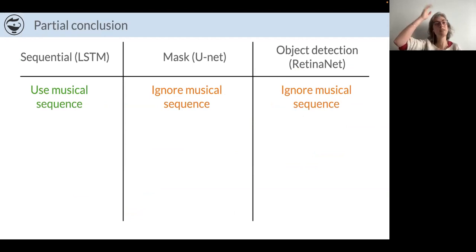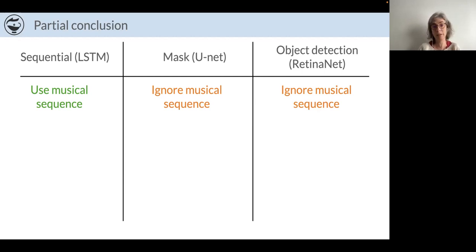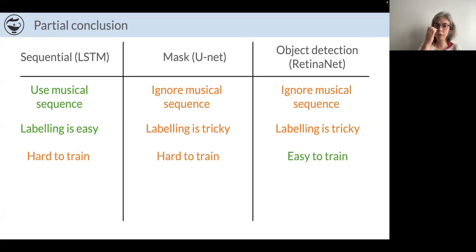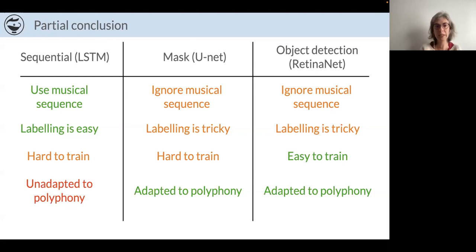To compare the three approaches: the sequential approach uses the musical sequence and directly predicts another form of sequence. Labeling is also easier with sequential approaches because you know what you put inside your music, whereas for spatial approaches you also need to know where symbols are placed by the engraving software. On the contrary, sequential (LSTM) and mask (U-Net) approaches are quite hard to train, whereas RetinaNet turned out to be quite easy to train and more accurate. And the key point that made us abandon LSTMs completely: they are not adapted to polyphony, whereas spatial approaches are compatible with polyphony.